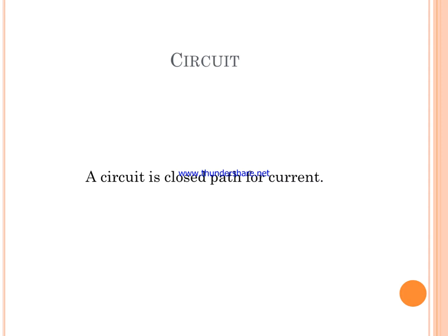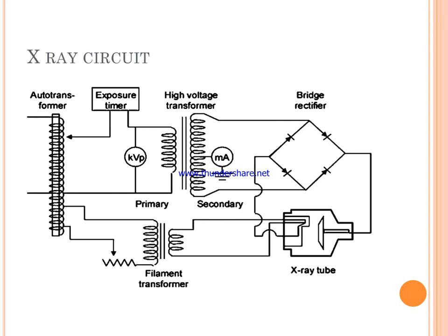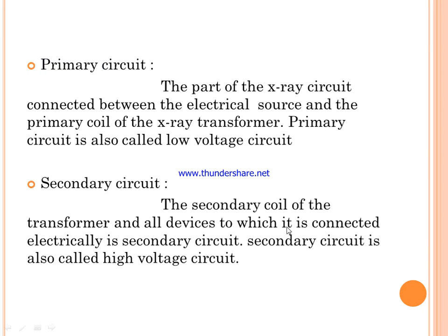Here is an image showing the X-ray circuit. It includes the auto transformer, exposure timer, high voltage transformer, the primary and secondary circuit, a bridge rectifier, and the connected X-ray tube.